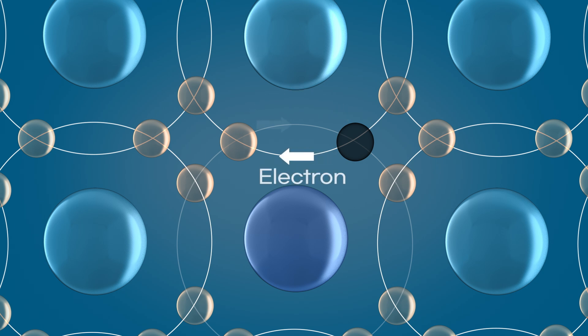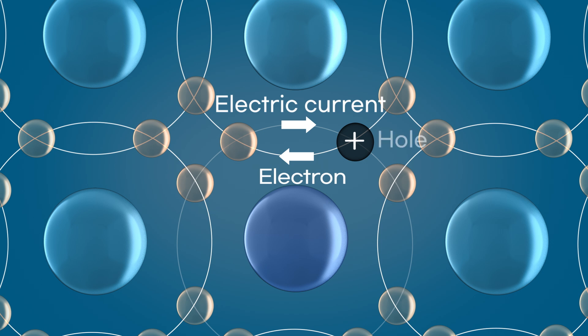When electrons move in one direction, the current flows in the opposite direction. The direction in which the hole moves is considered the direction of current flow. These holes are conceptualized as positively charged particles because they represent the absence of an electron.